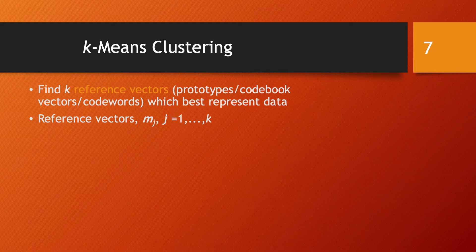In K-means clustering we have K so-called reference vectors, and the idea is that they are the means of each one of our clusters. We are aiming to identify K clusters and we have these means or reference vectors for each one of the clusters. They are also called prototypes, codebook vectors, or code words, and the idea is that they best represent the data in that particular cluster. We denote these reference vectors M_J with J from one to K.